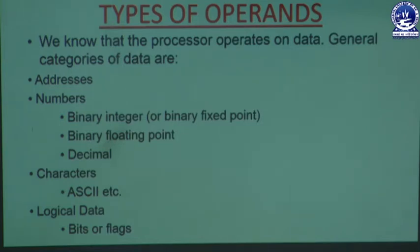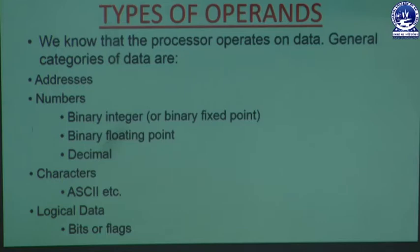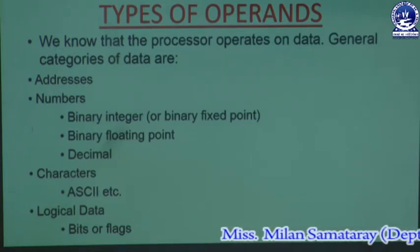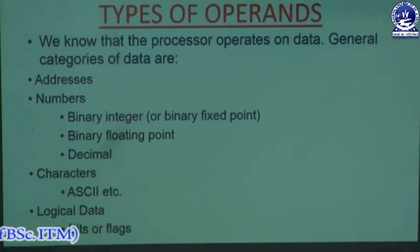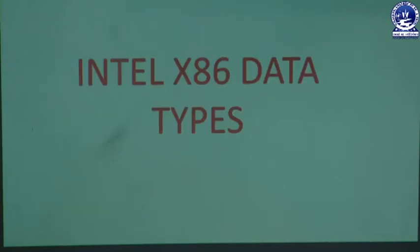These are the basic data types which we use as operands when writing instructions. We use different types of addressing modes to represent operands in an instruction, and different types of addressing modes have also been discussed previously. The processor operates on these data items. Next we will see what data types are used by different processors. First we will go to the Intel x86 data types.